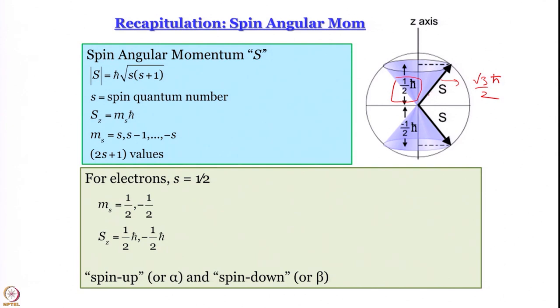If you square both sides, you get 3cos²θ − 1 = 0. This is the same magic angle we encounter in other contexts. The value of φ is completely undefined — that is why the tip of the arrow is shown defining the edge of a cone.